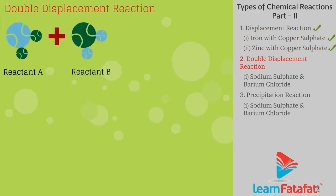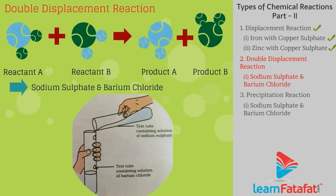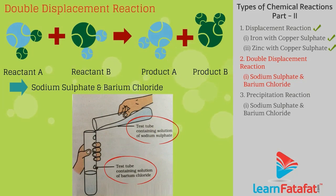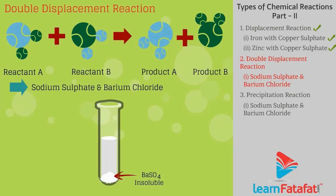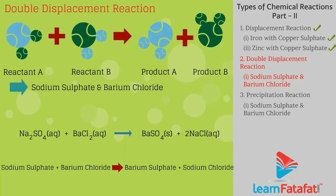Double displacement reaction: A reaction in which two different atoms or groups of atoms (ions) are exchanged. Example — sodium sulfate and barium chloride: Take 3ml of sodium sulfate solution in one test tube and 3ml of barium chloride solution in another. Mix the two solutions. A white insoluble BaSO4 precipitate is formed, and sodium chloride (NaCl) remains in solution: Na2SO4 + BaCl2 → BaSO4 + 2NaCl.